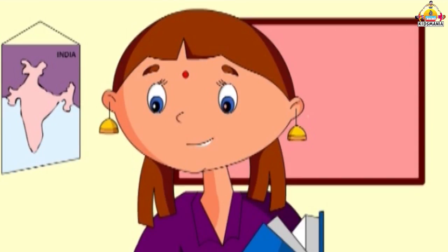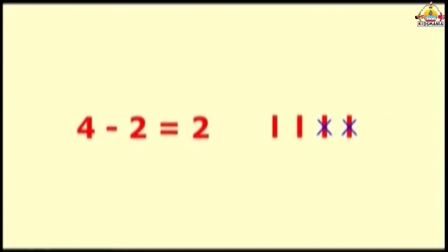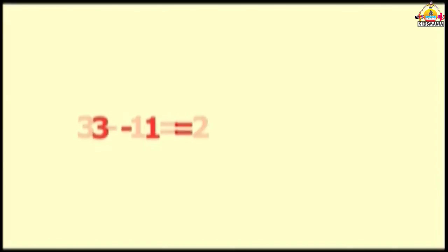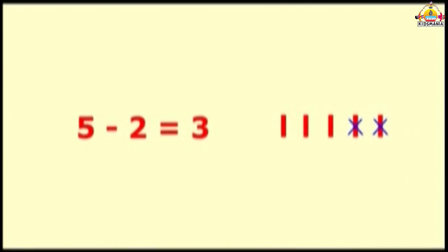Let's learn simple subtraction by row method. 4 minus 2 is 2. 3 minus 1 is equal to 2. 5 minus 2 is 3.